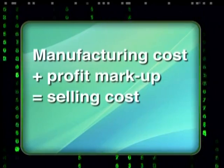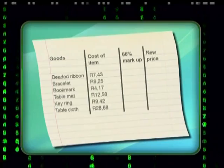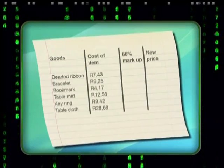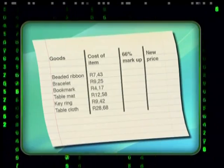While I'm certain Ma Di won't agree to increasing her prices by 200%, she might agree to say 66% on all her items. That would certainly increase her profits and make her long working hours worthwhile. I'll do all my calculations in this table. In the second column, I've written down the cost prices. In the next column, I'll add the additional 66% of the cost for each of the items. I'll use my calculator to work out the percentage.